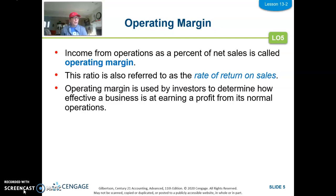The second ratio in profitability analysis is operating margin — income from operations as a percent of net sales. Profitability ratios are always expressed as a percent of net sales. This ratio is used by investors to determine how effective a business is at earning a profit from its normal operations, comparing one company to another. Managers within the business don't focus on this as much; they look at gross margin for product costs.